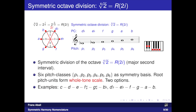In the next symmetric system the octave is split into six equal parts. There are six tonic pitch class units, and the interval between each pair of neighboring pitches is two semitones — a major second. Together they form a whole-tone scale, and there are two alternative options for such a division.